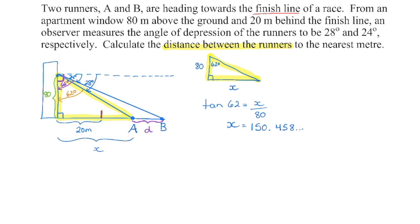There's more than one way to set these problems up — that's why it's important to show your work. If I choose to go with the 62-degree angle, this is my opposite side and this is my adjacent side, so I'm going to use the tangent ratio. And remember, we're not done yet — this only gives us the measure from one point to another, so I'm going to keep that number in my calculator.